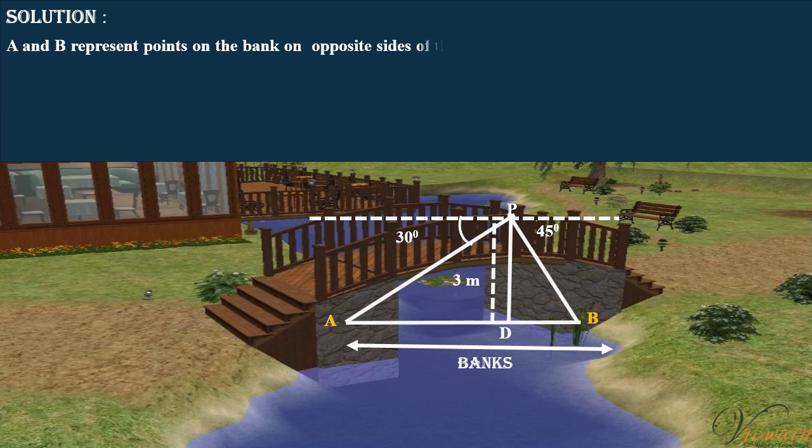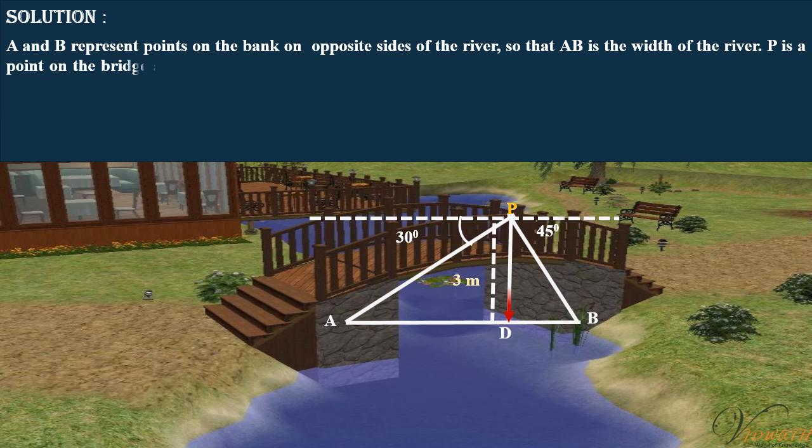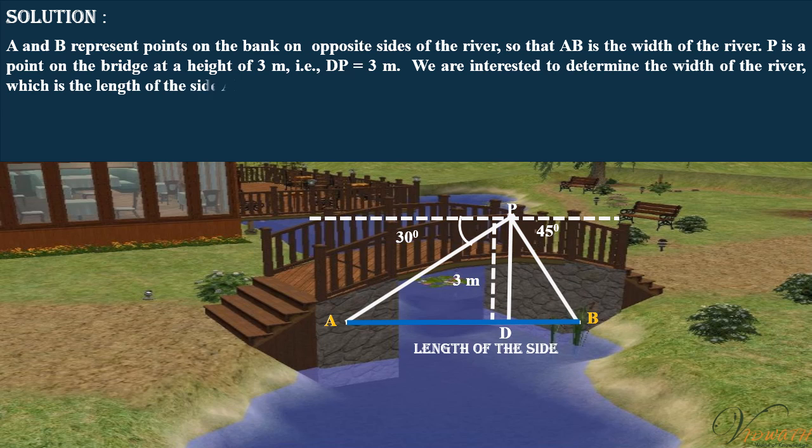Solution: A and B represent points on the bank on opposite sides of the river, so that AB is the width of the river. P is a point on the bridge at a height of 3 meters, that is DP is equal to 3 meters. We are interested to determine the width of the river, which is the length of side AB of the triangle APB. Now, AB is equal to AD plus DB.